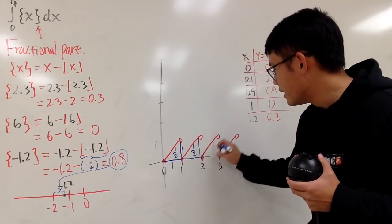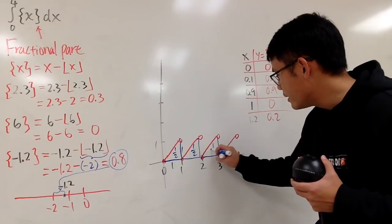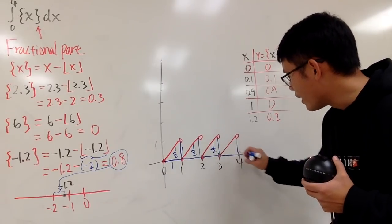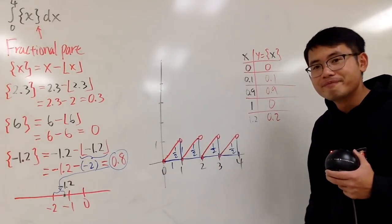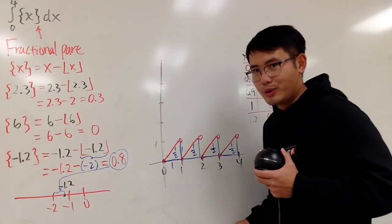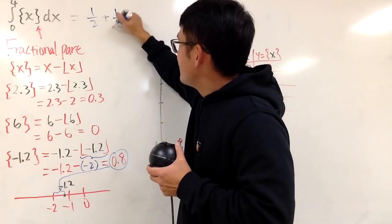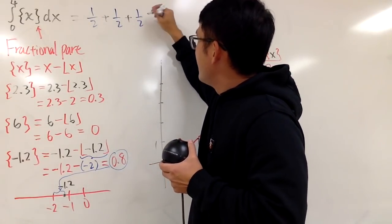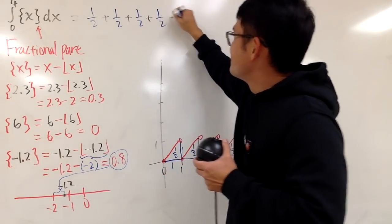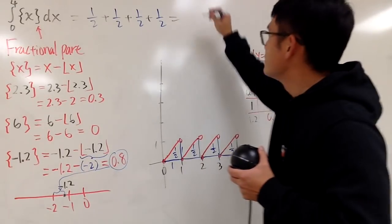Same thing here. 1, 1. And this is 1 half. And 1, 1. You get 1 half. Well, depending on how you want to write this down. You can put this down as 1 half plus 1 half plus 1 half and then plus 1 half. All together, 2.